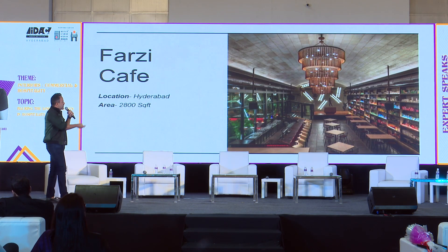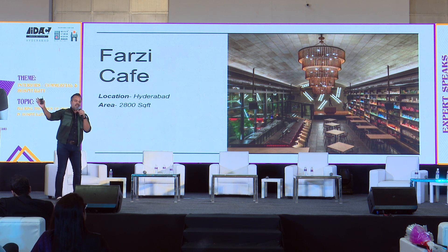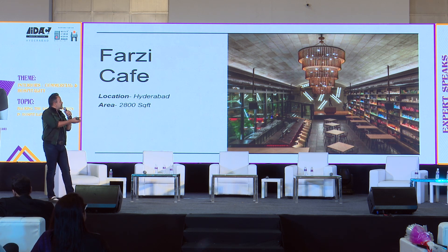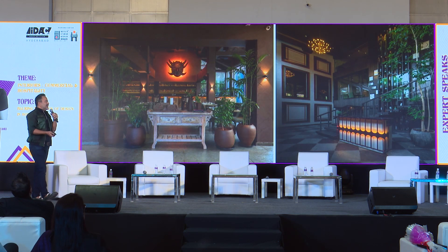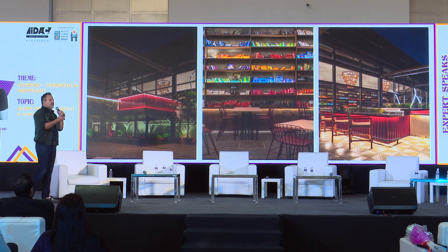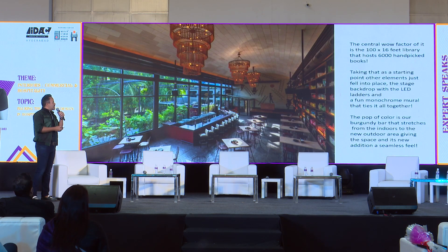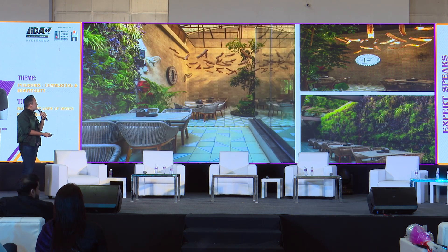The stage backdrop features ladders inspired by those tall libraries across the world where you move a ladder along the wall to pick up a book. The ladders are abstractly placed as LED ladders behind the stage, with fun murals in between that relate to the whole theme. I'm a strong believer that anything placed — whether a color or a design element — has to have some kind of meaning. Since we're talking about how the lines of design in hospitality are merged, that's where I'm keeping the conversation.